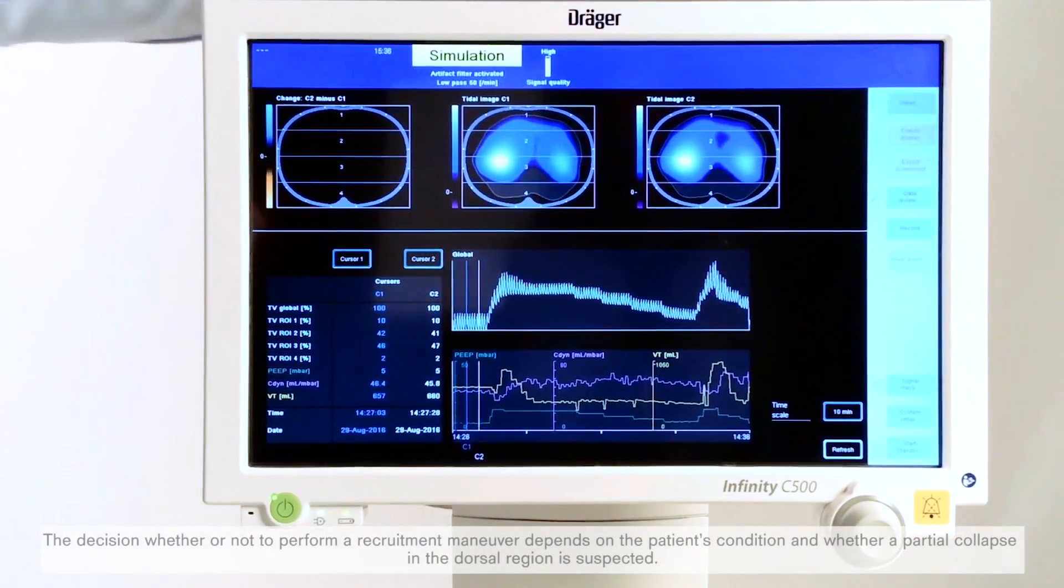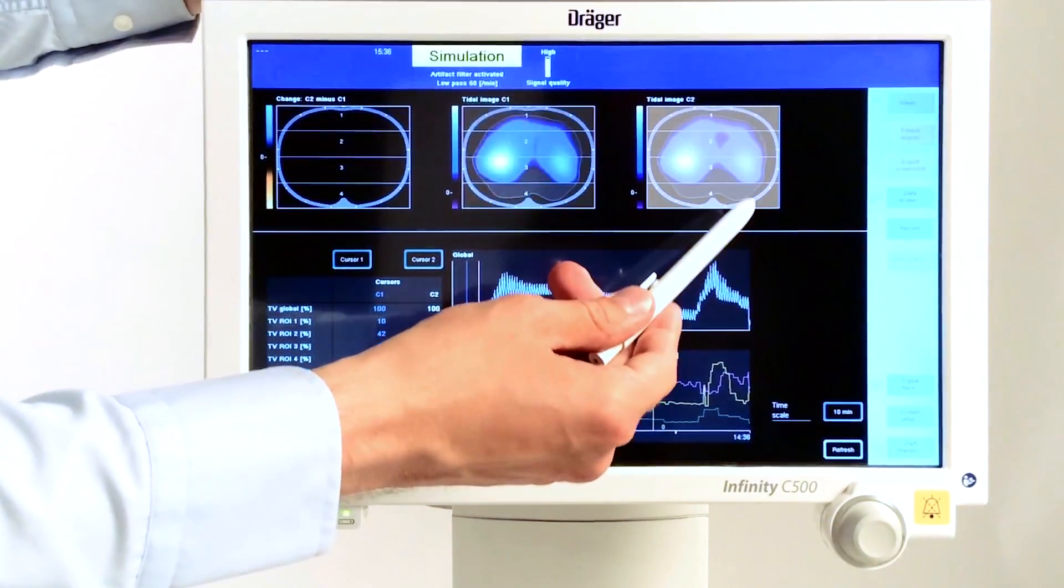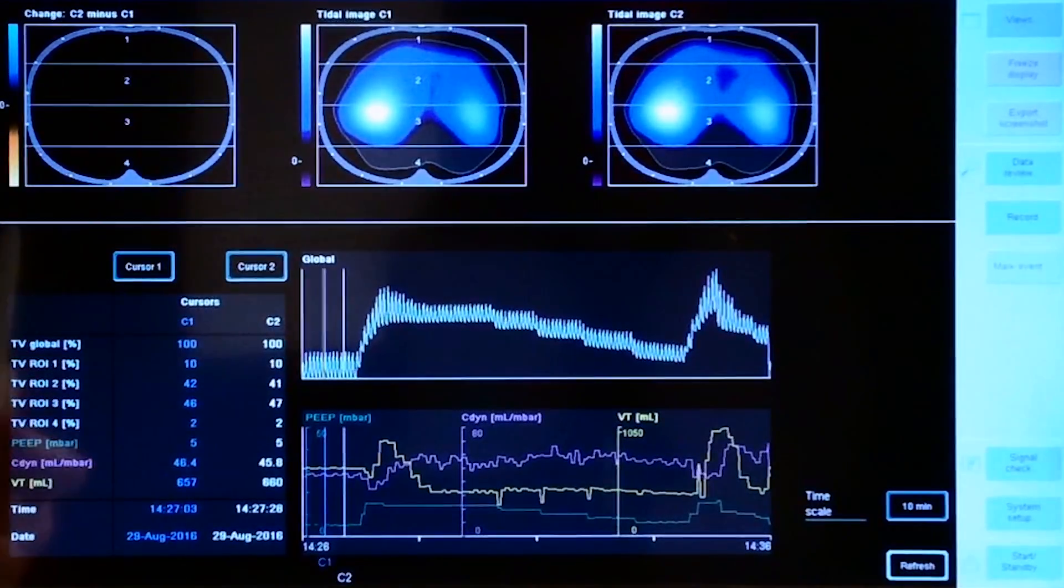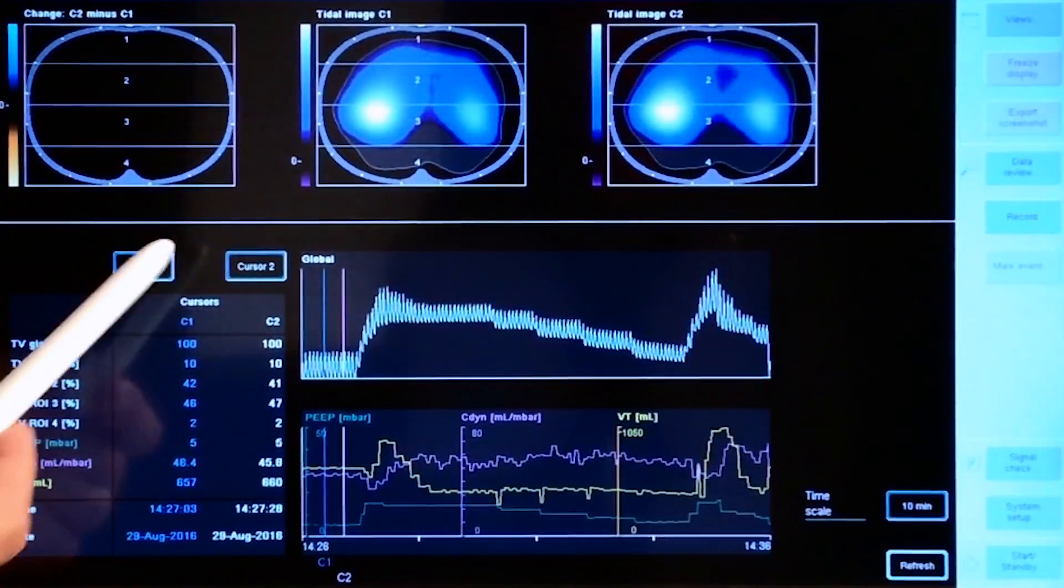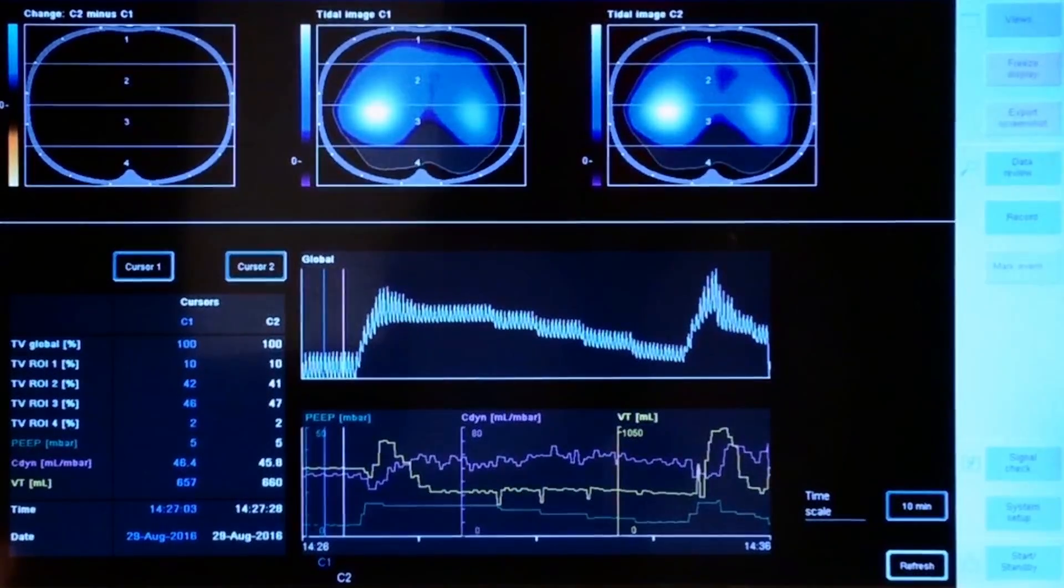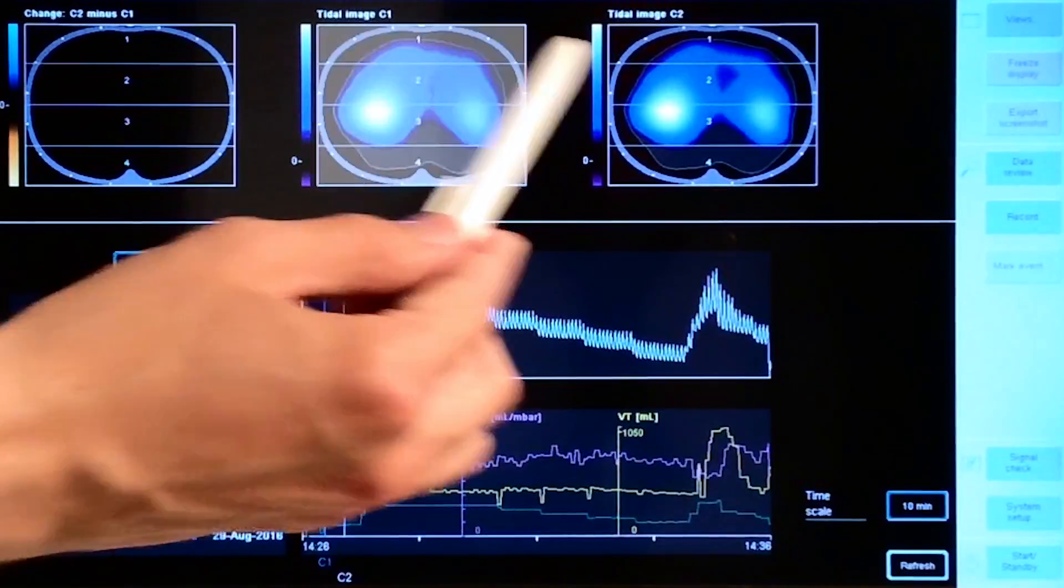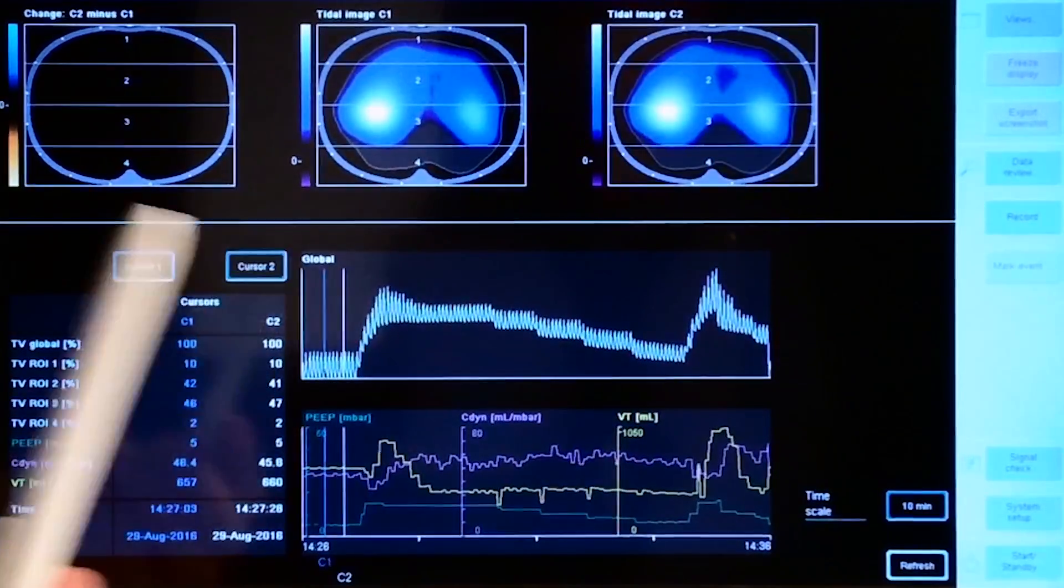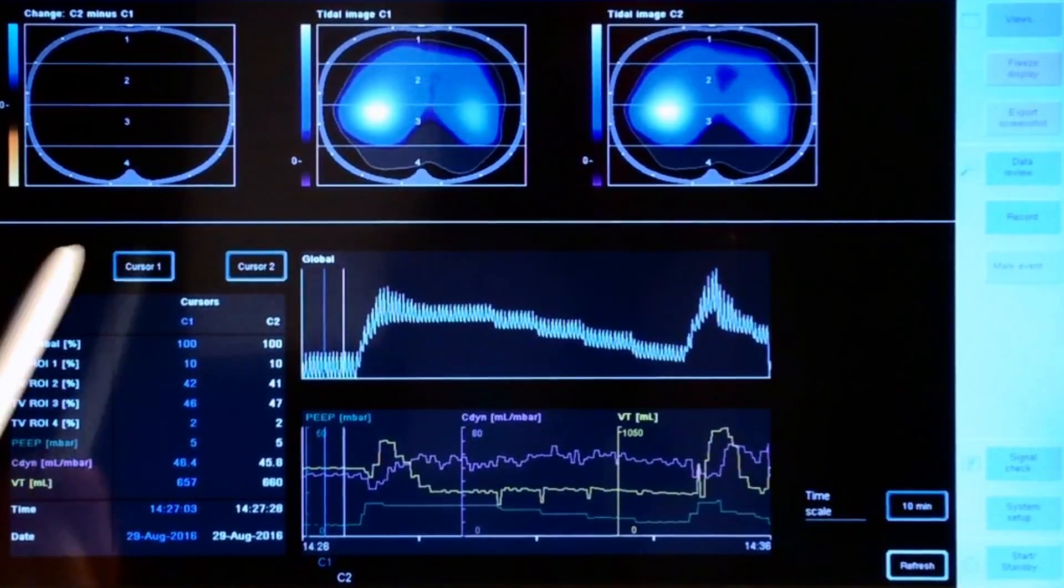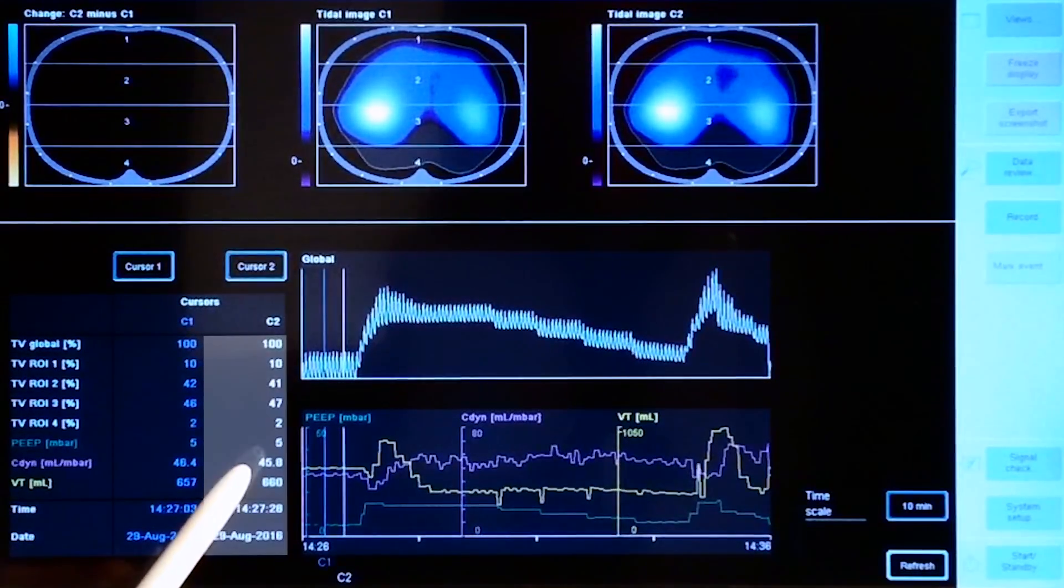The basic principle of this trend view is to compare two different time points. Cursor number one is used as a reference and cursor number two as a comparison point. Each cursor is represented by its own title image and corresponding trend table values.